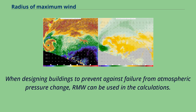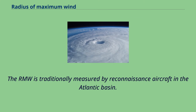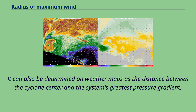When designing buildings to prevent against failure from atmospheric pressure change, RMW can be used in the calculations. The RMW is traditionally measured by reconnaissance aircraft in the Atlantic Basin. It can also be determined on weather maps as the distance between the cyclone center and the system's greatest pressure gradient.